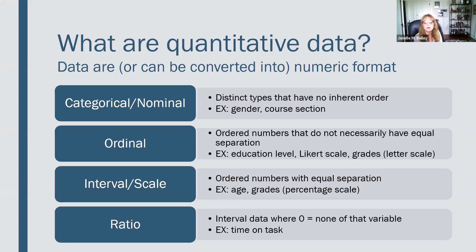The second type is ordinal data — ordered numbers that do not necessarily have equal separation. For example, education level: up through eighth grade, high school diploma, college degree, graduate degree. Those separations are not necessarily equal, particularly when you account for the realities of how people go through those programs. High school in the US is considered four years, college is aimed at four years, but the actual graduation rate is something like 5.6 years.